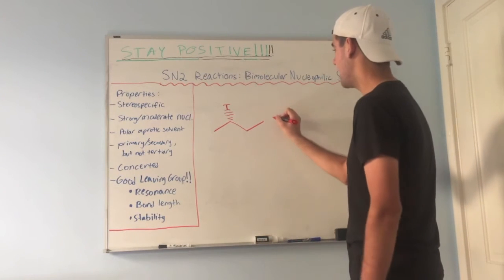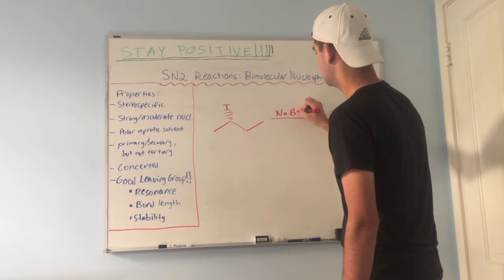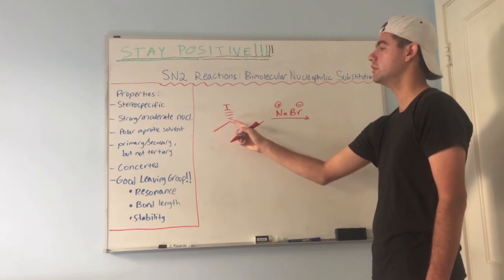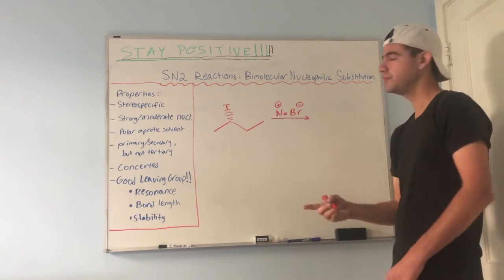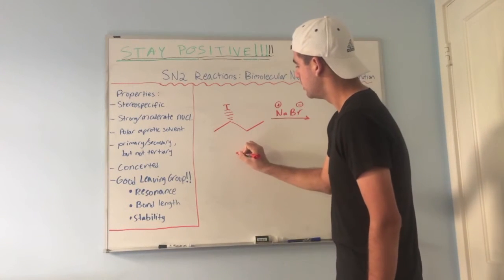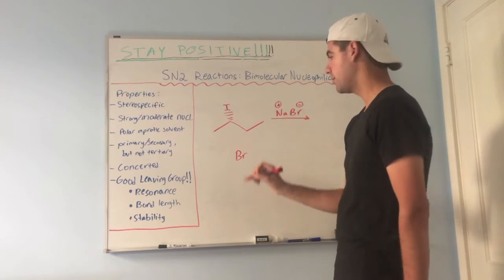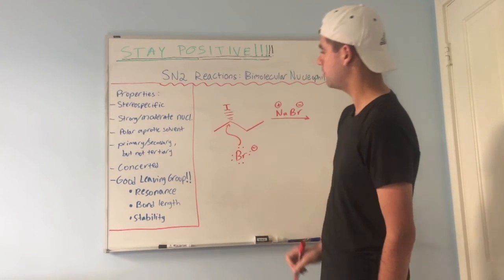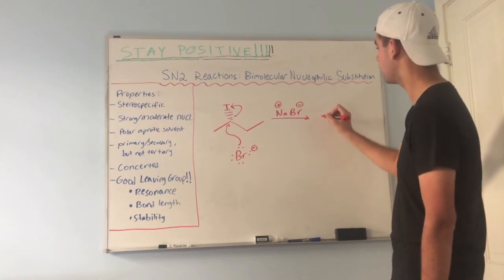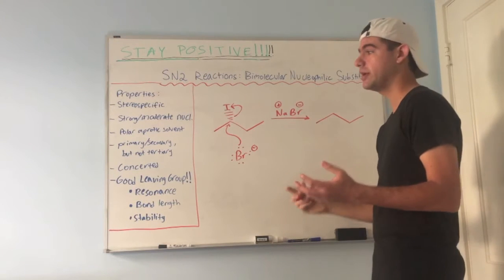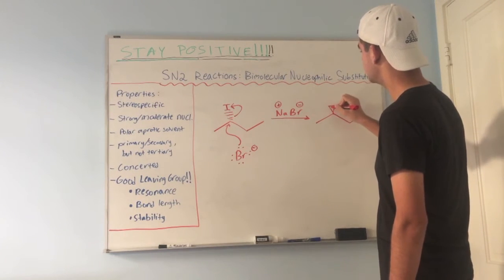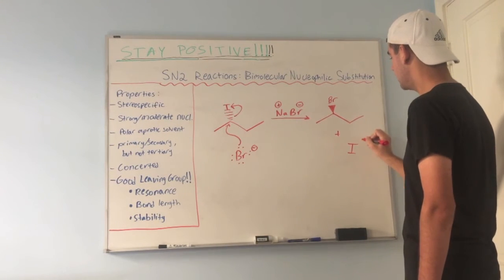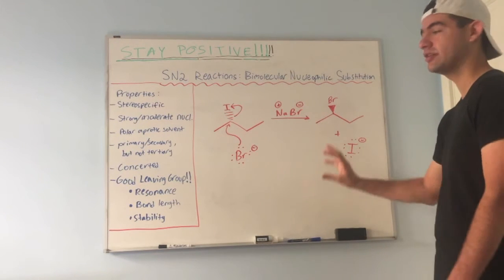For example, let's say we have a molecule with iodine on a dash bond and we react it with NaBr. The Br⁻ is negatively charged; Na⁺ is a spectator ion. The electrophilic carbon is the one attached to the iodine leaving group, which is stable as I⁻. The Br⁻ will attack that electrophilic carbon and shoot electrons up to the iodine. The same carbon chain results, but now the stereochemistry is inverted — bromine is now a wedge instead of a dash — and we also form iodide ion. That's what we mean by stereospecific: stereochemistry is always inverted at the attack site.